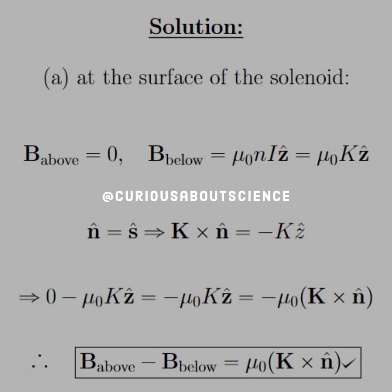We know that the field of the solenoid is consistent inside the solenoid but zero outside. So above would be zero, and below would be mu naught n times I in a z-hat direction. And then, nI is just equal to the area current density K, hence it equals mu naught K z-hat.